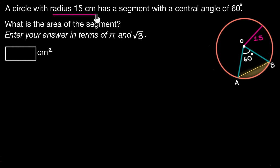A circle with radius 15 cm has a segment with a central angle of 60 degrees. What is the area of this segment?